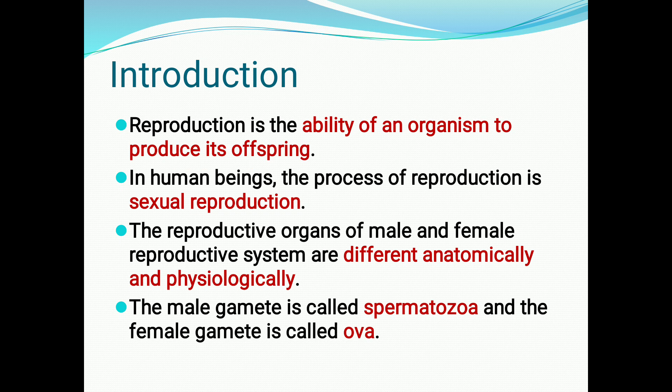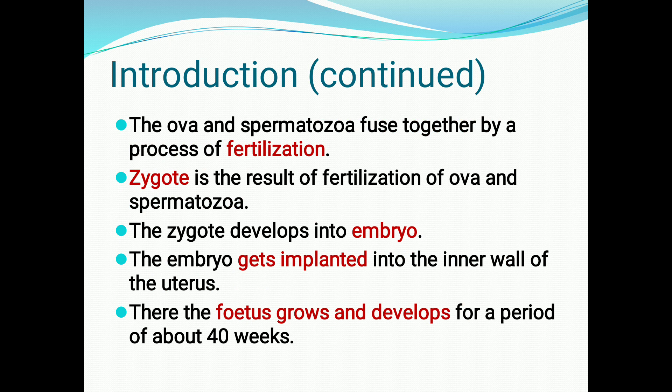The male gamete is called spermatozoa and the female gamete is called ova. They undergo fertilization — ova and spermatozoa fuse together, and that process is called fertilization. After fertilization, a single cell is formed, and that single cell is called a zygote, which is the result of fertilization of ova and spermatozoa.